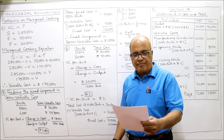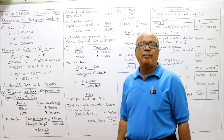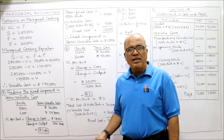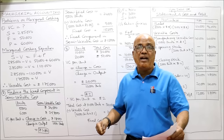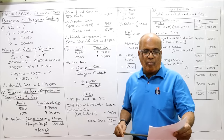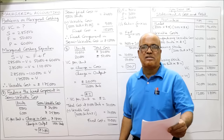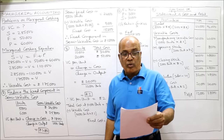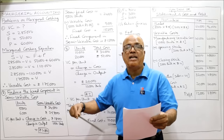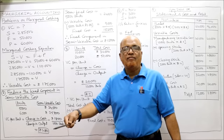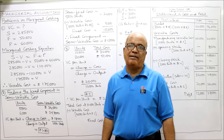Second problem: determine the fixed component in the semi-variable cost. Remember, semi-variable cost consists of partly fixed and partly variable. In this problem we have to find the fixed component in the semi-variable cost of Measures Model House Limited. Semi-variable cost on producing 5,000 units is rupees 24,000. Semi-variable expenses on producing an additional 1,000 units is rupees 1,800.